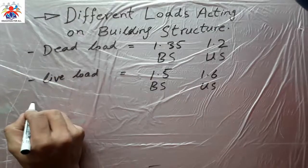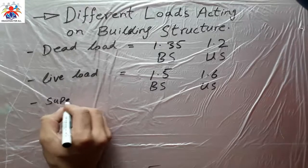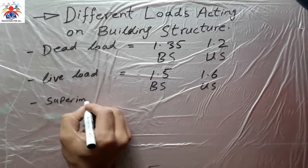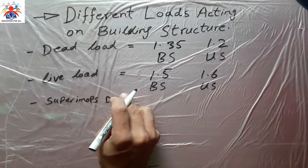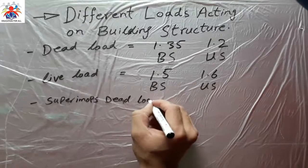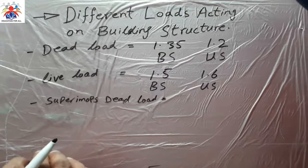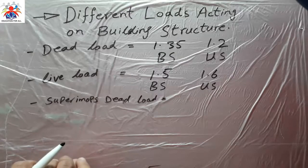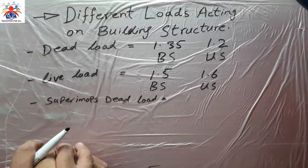The third load we have is superimposed dead load. Superimposed dead load is a load which is added to the dead load. For example, if we have constructed a building with walls, beams, and columns, and later we decided to put some extra load.